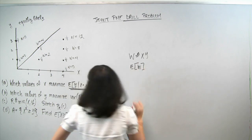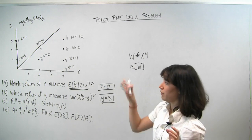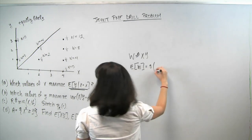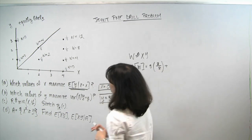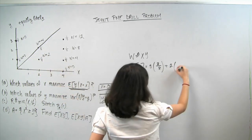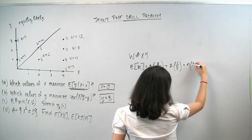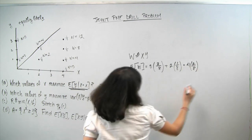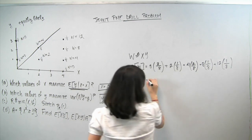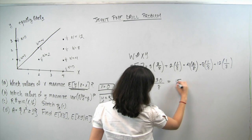Using the standard expectation formula, E[W] = 0·(3/8) + 2·(1/8) + 4·(2/8) + 8·(1/8) + 12·(1/8). The numerator sums to 0+2+8+8+12=30, giving E[XY] = 30/8 = 15/4. So the unconditional expectation of x times y is 15/4.